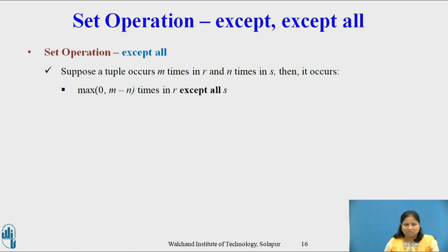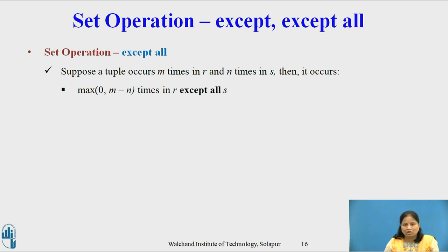Set operation Except All. Suppose a tuple occurs m times in relation r and n times in relation s, then it occurs max of 0 and m minus n times in r Except All s. If Jones has 4 accounts and 3 loans at the bank, there will be max of 0 and 4 minus 3 equals 1, so one tuple in the result. If Jones has 3 accounts and 4 loans, then max of 0 and 3 minus 4 equals minus 1, so max of 0 and minus 1 is 0 — there will be no tuple in the result.